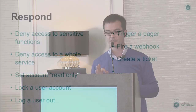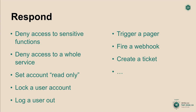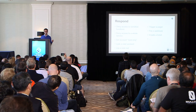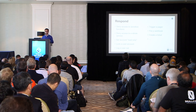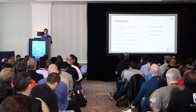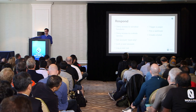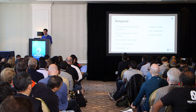Once we've detected anomalies and written security alerts, we want to respond. Since we're lying inside the application, we can implement any kind of security response: deny access completely to sensitive functions, deny access to a whole service, mark an account as read-only so it can't push to the database, log a user out, or trigger generic alert methods like a pager, a webhook, or creating a ticket. All of this is possible.